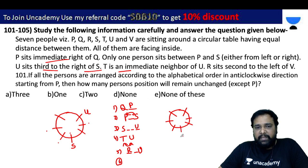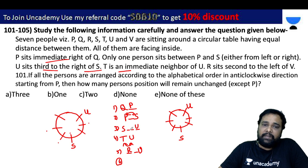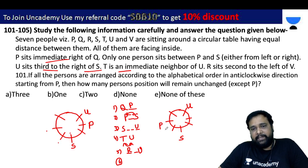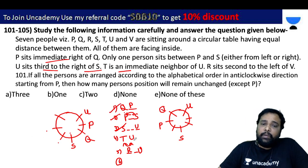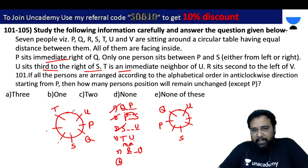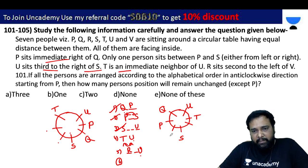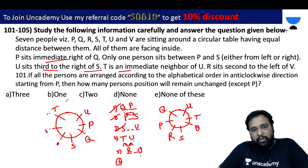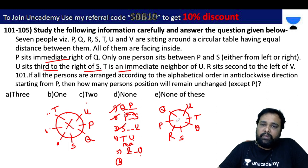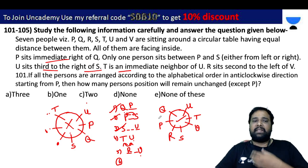We have two possibilities. Q is the immediate right of P, and P is the immediate left of Q. U is near T — one of U's neighbors is T. V is second left of R. Checking both cases, one case turns out to not be possible, so we are left with one valid arrangement.